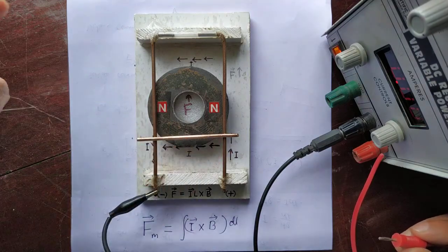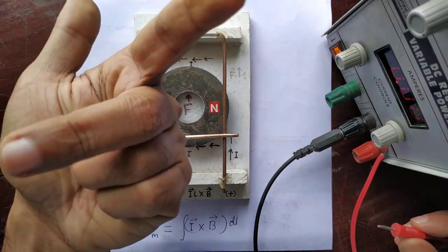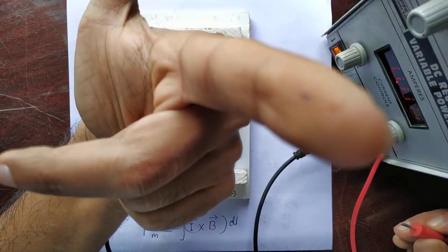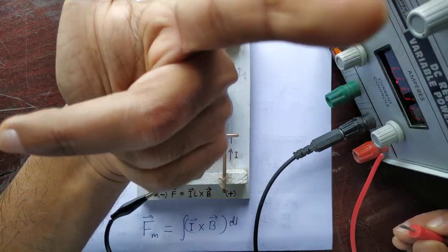So according to Fleming's left hand rule, the field is pointing towards you, and the direction of current is from right to left. Therefore, we are expecting a magnetic force in the upward direction.